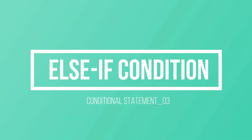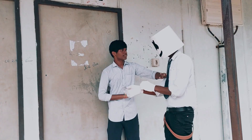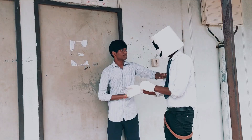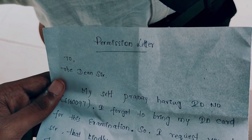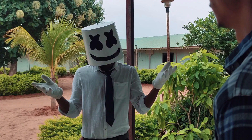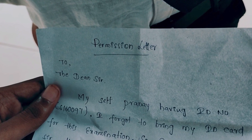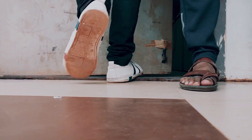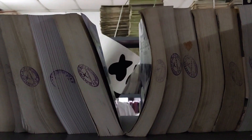Next is else-if (lsif). Else-if works in the same situation as if-else, but with an added condition. For example, if you have an ID card you enter the exam hall. If not, the next condition checks — if you have a permission letter, the else-if block executes. That is, even without an ID card, if you have a permission letter you can still enter via the else-if block.